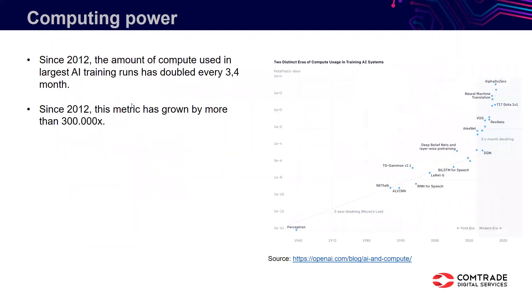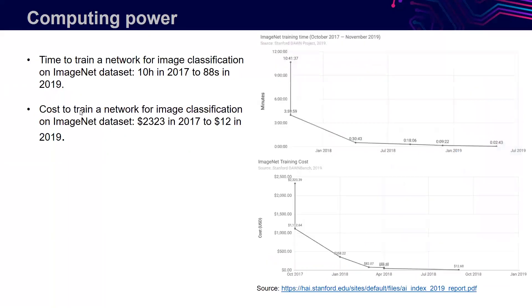The first thing we have to look at is computing power. We all know how computing power enabled the whole deep learning revolution, but it's still interesting to look at the numbers because this hasn't stopped. The rise in computing power is continuing and it's steep. If we look at the chart on the right, it shows what was the amount of compute used for the most complex models built. For a long time it followed Moore's law, but then around 2012 it started really, really growing — much faster than before. Since 2012, this metric has increased 300,000 times.